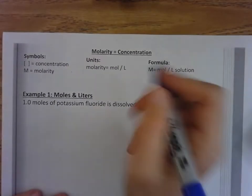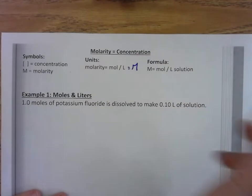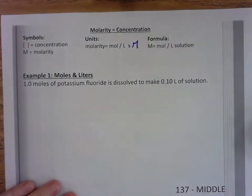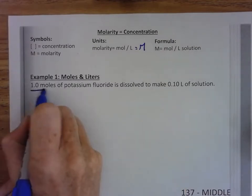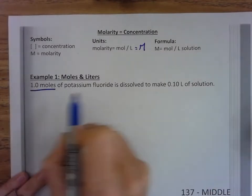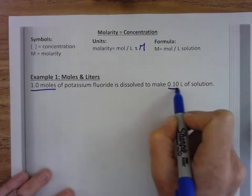And this is big M. So this is the middle of 137. Here I have 1.0 moles of potassium fluoride, and it's dissolved to make this many liters of solution.